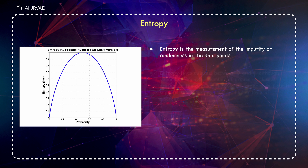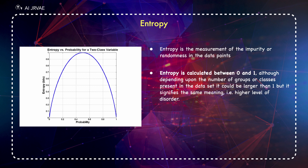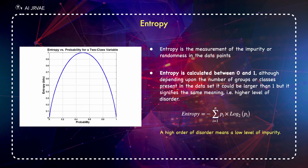Entropy is calculated between 0 and 1, although depending upon the number of groups or classes present in the dataset it could be larger than 1, but it signifies the same meaning — a higher level of disorder. A high order of disorder means a low level of purity.